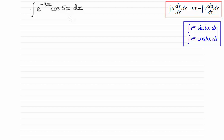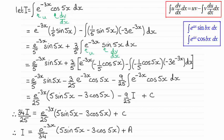OK, welcome back then. So let's see how you got on. Well it's quite a lot of work as you can see, but the answer turns out to be e to the power minus 3x over 34, all multiplied with 5 sine 5x minus 3 cosine 5x, and then plus a constant of integration which I've called A.